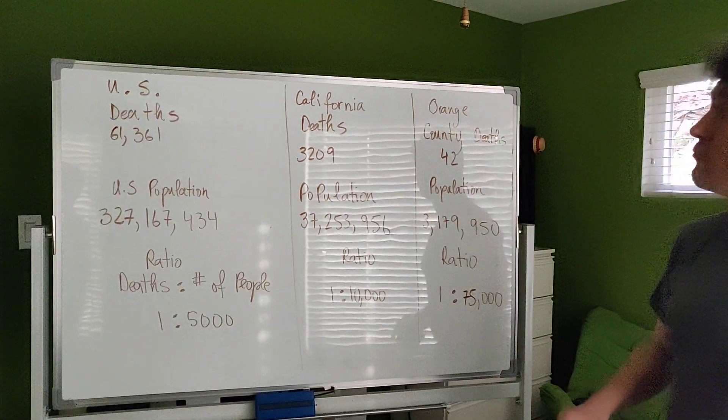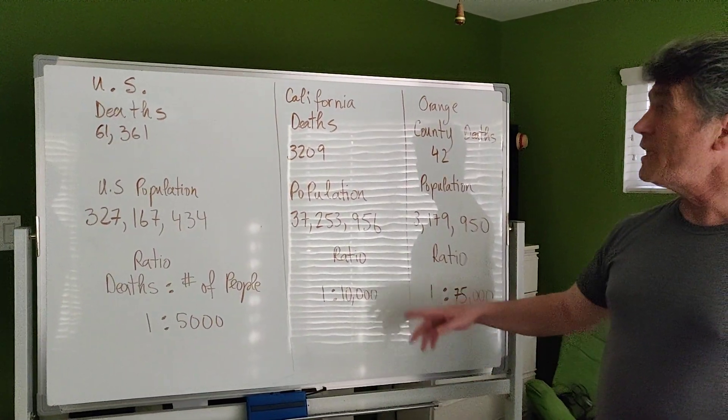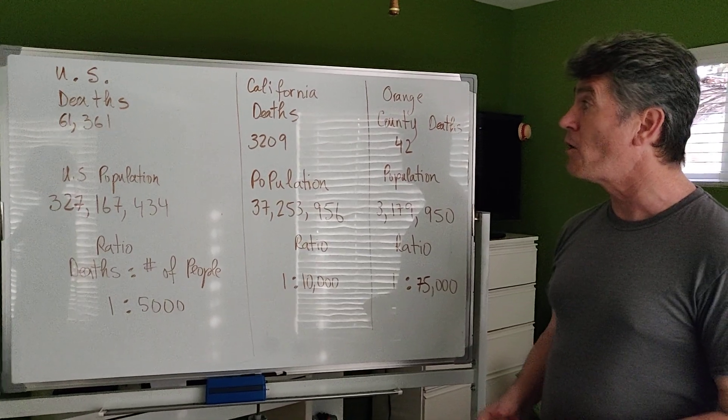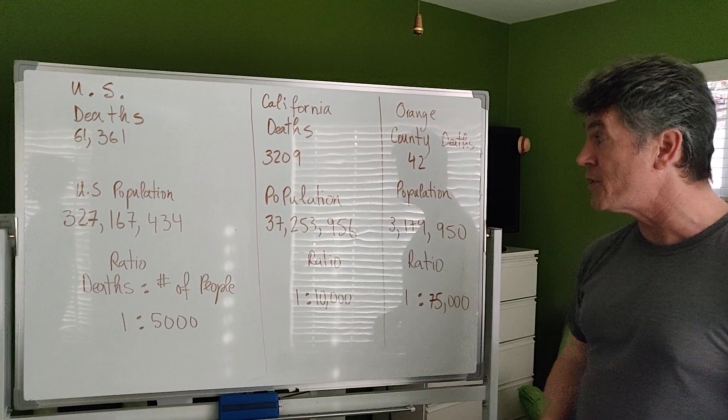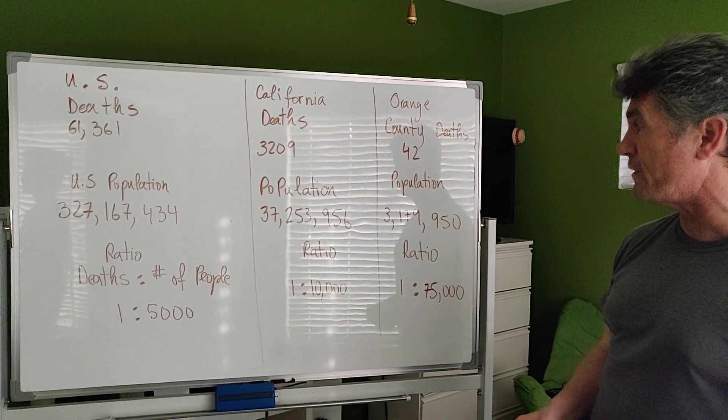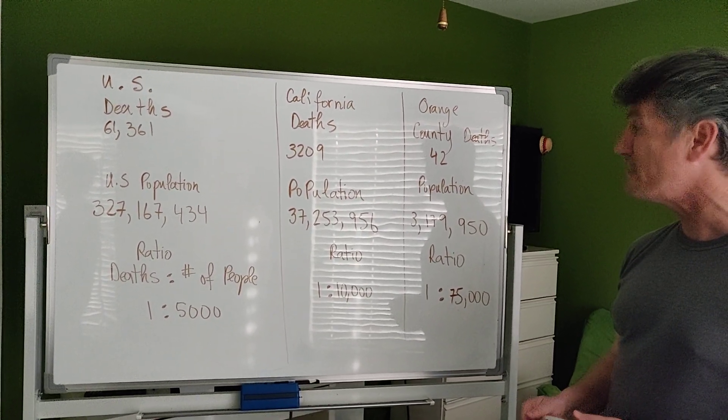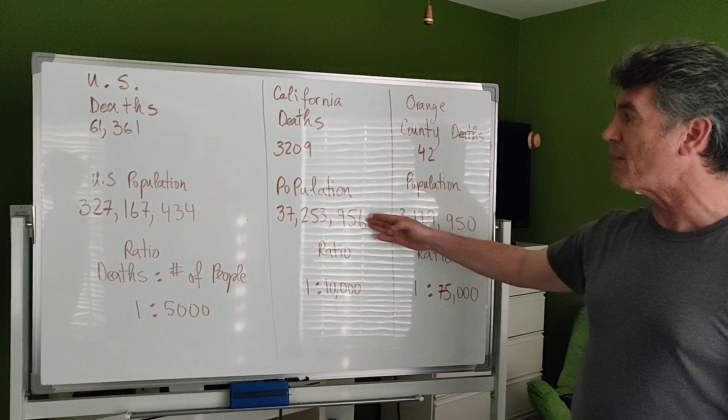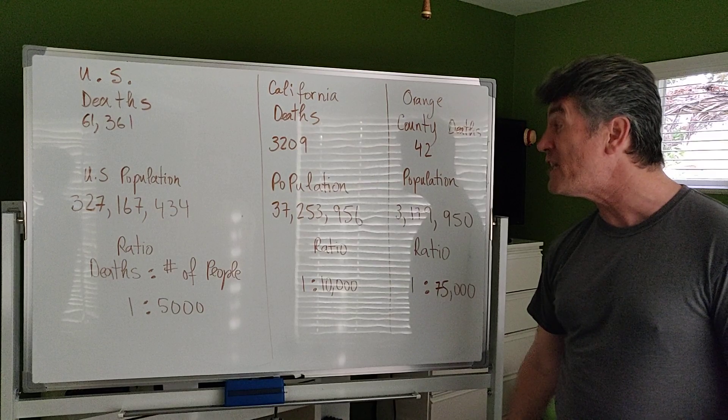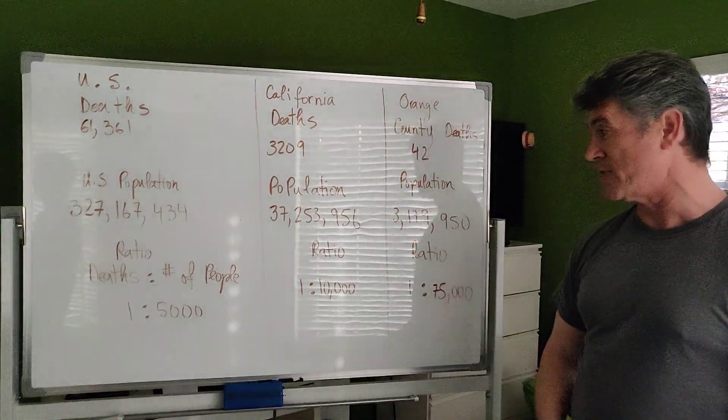Let's take a look at California. That's where I'm from. The number of deaths in California from COVID is 3,209. The population of California is 37,253,956. Again, if you divide the number of deaths by the population, you get a ratio of 1 to 10,000.